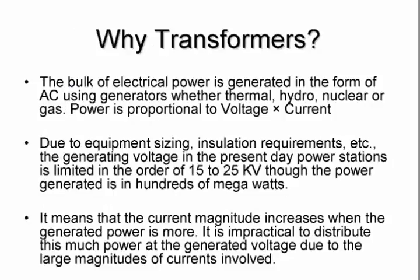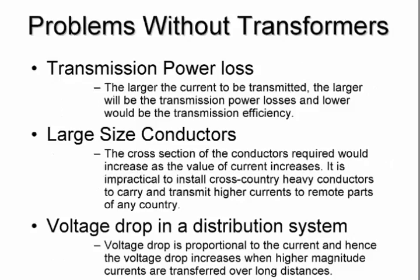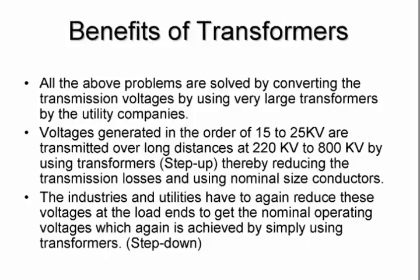Why do we use transformers? The bulk of our power is generated by generators, which can be thermal, hydro, or nuclear. Due to equipment sizing and insulation, the voltage generated is anything between 15 and 25 kilovolts, and the power is in megawatts. Now if we want to distribute at this voltage, the current magnitude will be very high, meaning a lot of losses — transmission power loss, large size conductors, and voltage drop in our distribution system. That's why we need to step it up before distributing.